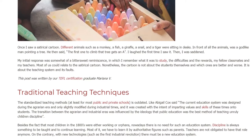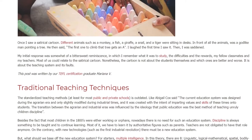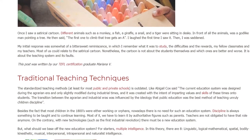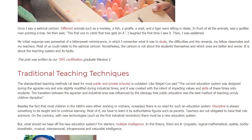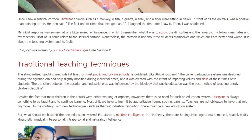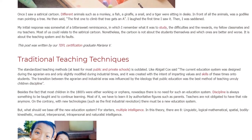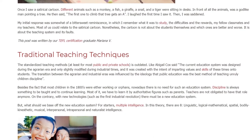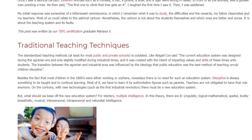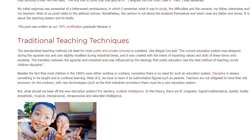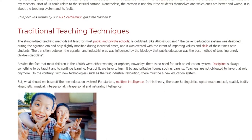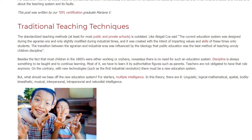The standardized teaching methods, at least for most public and private schools, are outdated. As Abigail Cox said, the current education system was designed during the agrarian era and only slightly modified during industrial times, and it was created with the intent of imparting values and skills of those times onto students. The transition between the agrarian and industrial era was influenced by the ideology that public education was the best method of teaching unruly children discipline. Besides the fact that most children in the 1800s were either working or orphans, nowadays there is no need for such an education system.